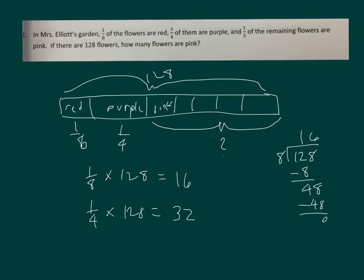So I have 16 and 32, which are my red and purple. And I'm going to add those two numbers together because I'm going to take that away from 128. So I was taking away 48 from 128 to be able to get the rest of those flowers. And then I'll be able to get 1/5 of the amount.